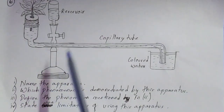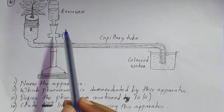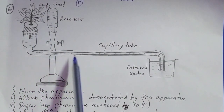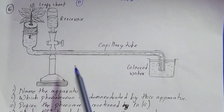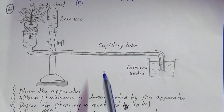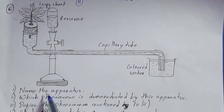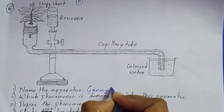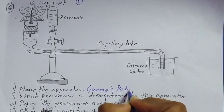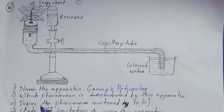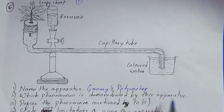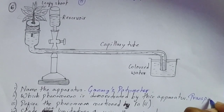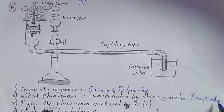Now the diagram-based question. This is the setup of Ganong's potometer. You can see there is a reservoir, a small twig which is cut and placed in the setup, a capillary tube, and colored water. This is the setup of Ganong's potometer, which is used for measuring the rate of transpiration. The first question is: name the apparatus — it is Ganong's potometer, named after a scientist. The next question: which phenomenon is demonstrated by this apparatus? The phenomenon demonstrated is transpiration.